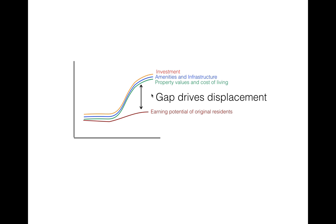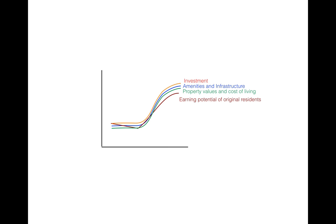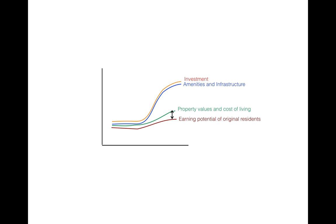There are two ways to limit displacement and limit that gap. One is to find ways to boost the speed at which the earning potential of the neighborhood's original residents rises. The other is, at least for a percentage of the housing stock, to find ways to make sure that property values and cost of living don't rise any more quickly than the earning potential of the original residents. In the next few slides, I'm going to show you some of the interacting feedback loops that set up this steep rise and some of the interventions that have potential to limit the gap.